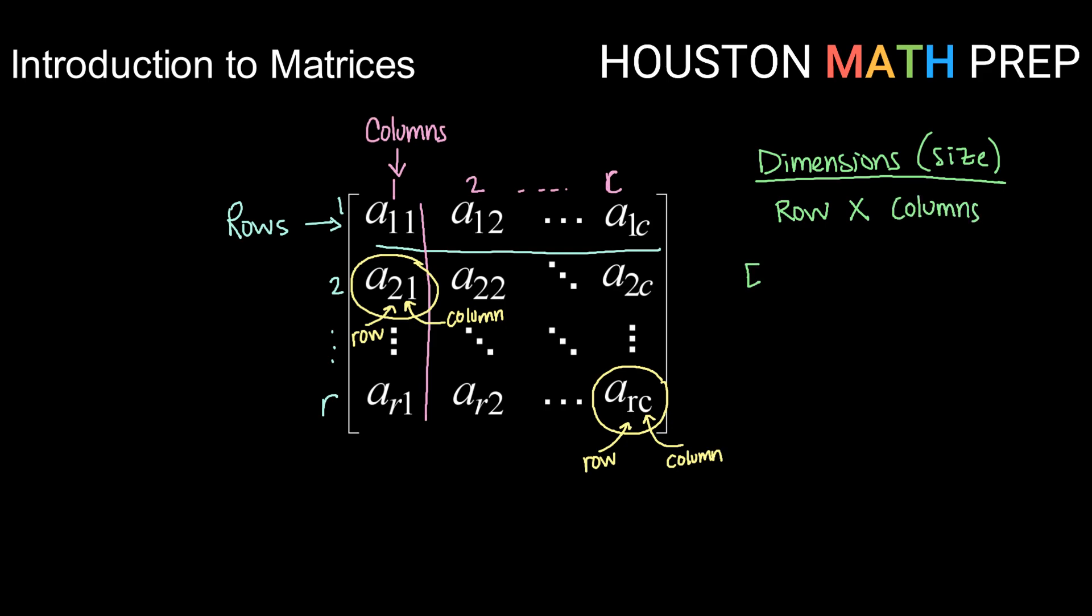For example, a four by two matrix would have four rows and two columns. If we were to draw that, we would have one, two, three, four rows.